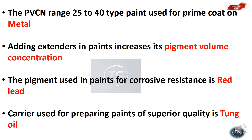The pigment used in paints for corrosion resistance is red lead. The carrier used for preparing paints of superior quality is tung oil.